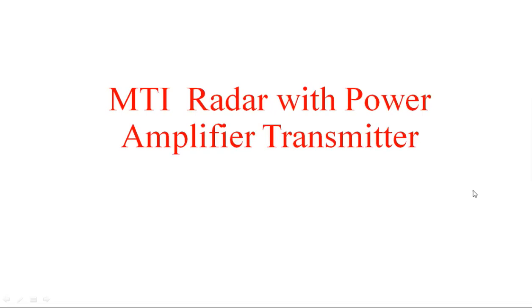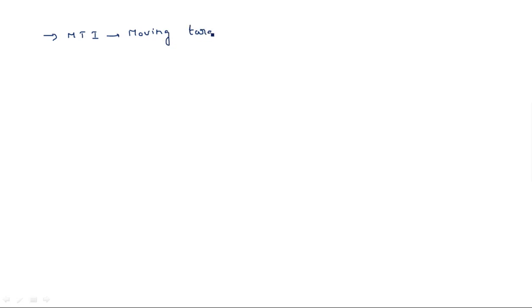In this video I am going to explain about the MTI radar with the power amplifier transmitter. MTI radar stands for Moving Target Indicator. Moving Target Indicator and pulse Doppler radar are used to identify moving targets among stationary clutters. Clutters are stationary objects which are not required in the case of MTI radar and pulse Doppler radar. MTI radar is specially designed for the identification of moving targets among a large number of clutters by using pulse transmitters.